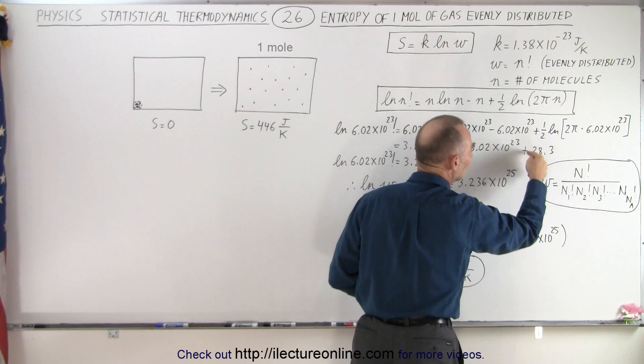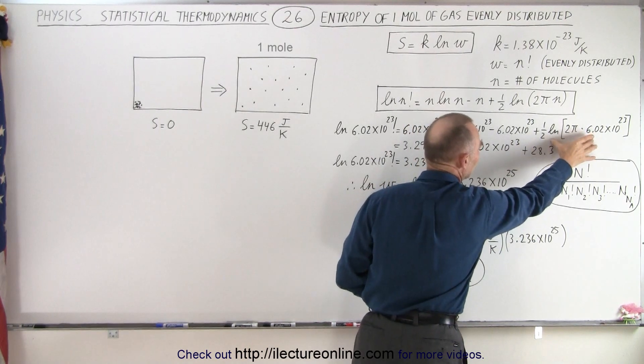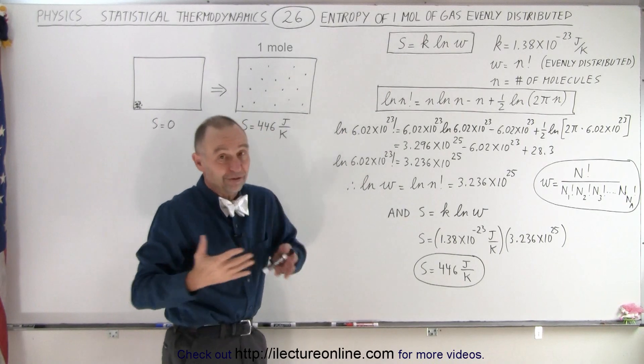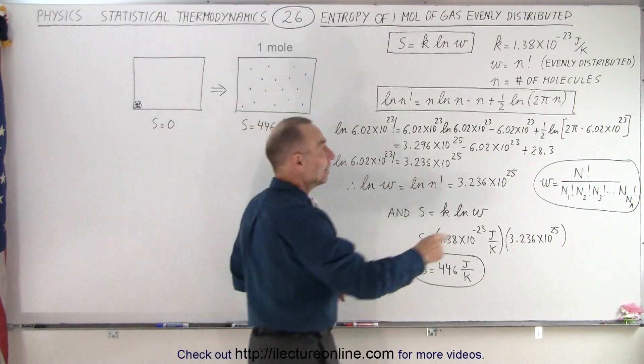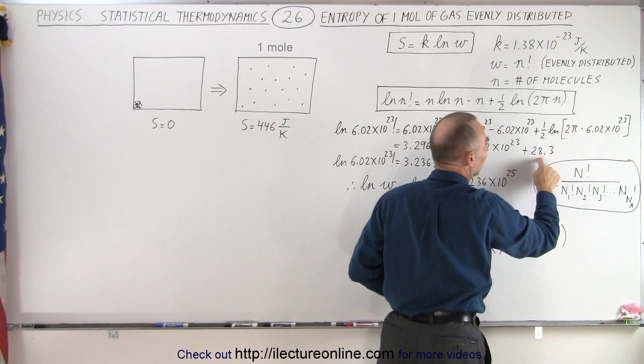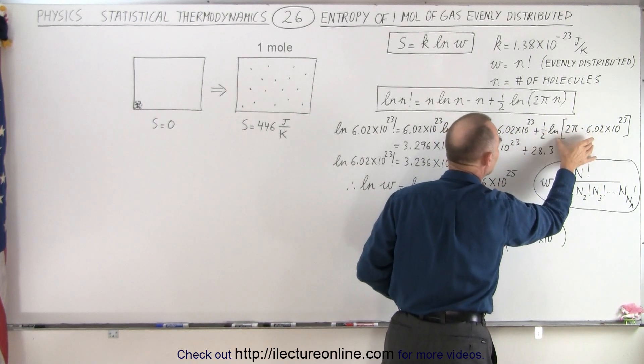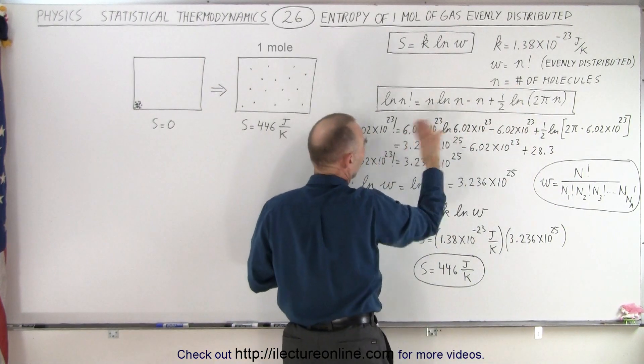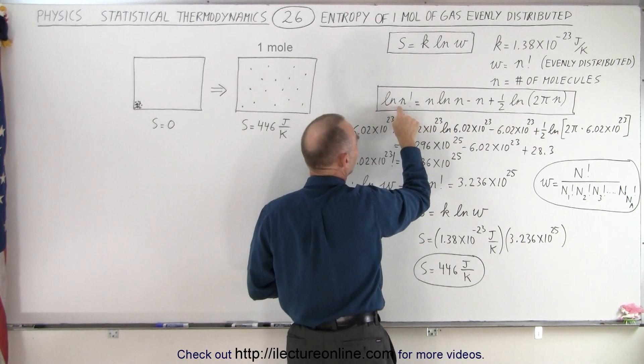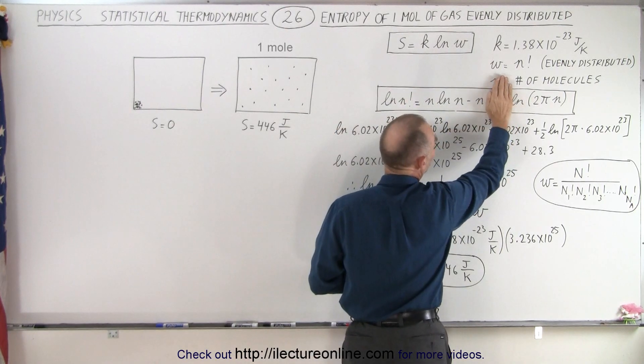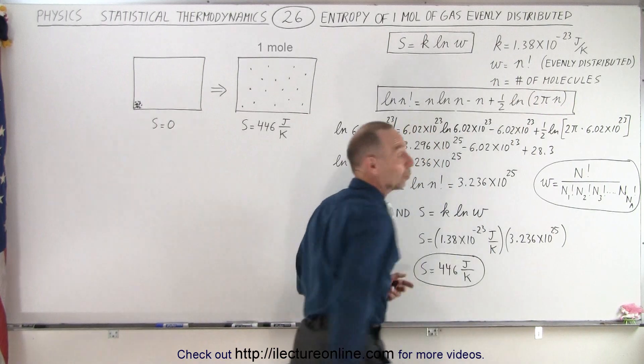Now notice how small this number is, which came from this term, when the number n is very large. Now when the number is 2 or 3 or 5 or something like that, then this term is actually still somewhat significant. But you can see here that this term now becomes completely insignificant. So essentially, we can say that for large numbers, the natural log of n factorial is simply n times the natural log of n minus n, and we can simply drop that portion of the equation.